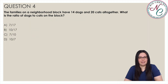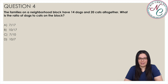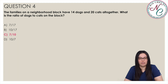Question 4. The families on a neighborhood block have 14 dogs and 20 cats all together. What is the ratio of dogs to cats on the block? Is it A, 7 over 17; B, 10 over 17; C, 7 over 10; or D, 10 over 7? The correct answer is C, 7 over 10. The ratio of dogs to cats is 14 over 20, which can be further reduced to 7 over 10.